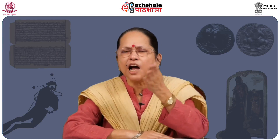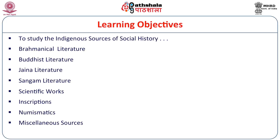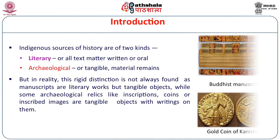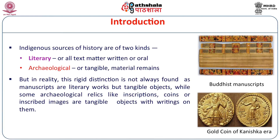Our learning objectives are many. We have to investigate the indigenous sources of history because we do not have any specific text which highlights the social history of India. So we have to look through and sift evidence from various sources such as Brahmanical literature, Buddhist and Jain literature, Sangam literature, scientific works, inscriptions, numismatics and miscellaneous sources — the last three constituting archaeological sources. All historical evidences are based on some kind of sources, and for the history of early India we have literary and archaeological sources. The rigid distinction is not always found everywhere, because all of these materials constitute the whole substance we require to analyze the history of India.